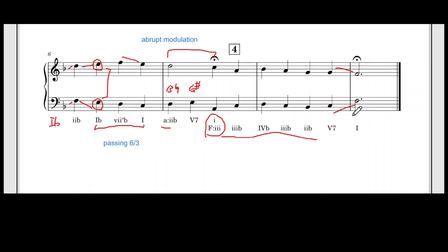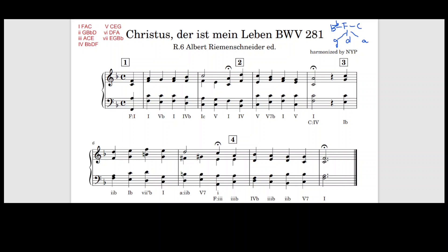Now let's go to step five: fill in the inner parts — that is, the alto and the tenor. But do not add decorations at this moment. Let's check the notes vertically. F, F — we need the A and C. After the bar line, still a one chord: F, F, A, C. Try to put the tenor higher near the middle C area. The next chord is a five: C, E, G. This G is supposed to be repeated — that is the fifth. In order to make the inner part smoother, I double the fifth.